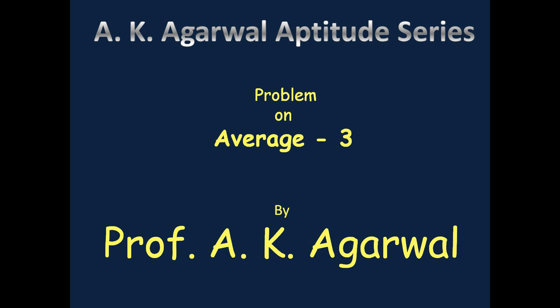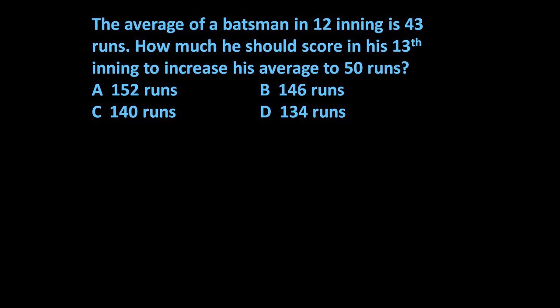Hello friends and welcome to AK Agrawal Aptitude Series. In this session we are going to learn a technique for solving a problem on average. The given problem is: the average of a batsman in 12 innings is 43 runs. How much should he score in his 13th inning to increase his average to 50 runs? So up to the 12th inning his average is 43, but after the 13th inning we want his average to increase to 50 runs.